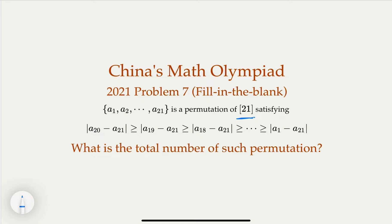And this is a permutation of it, however, it's satisfied that the absolute value of the difference of the final element, a21, which is the final element, is in sorted order. So the question is, what is the total number of such permutation?